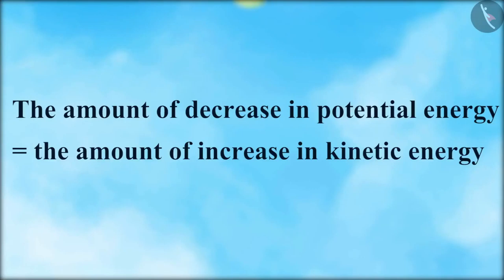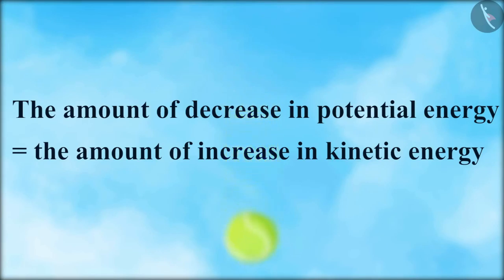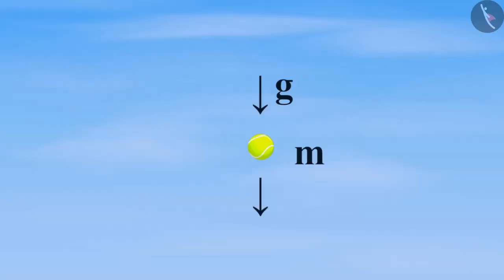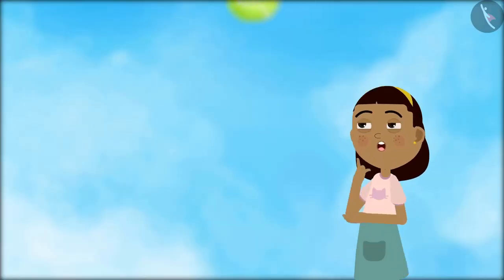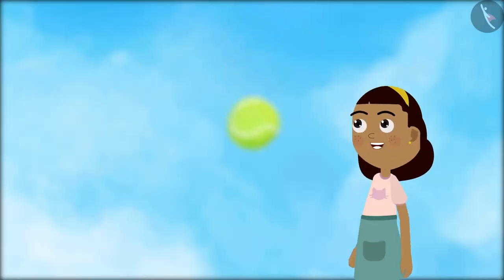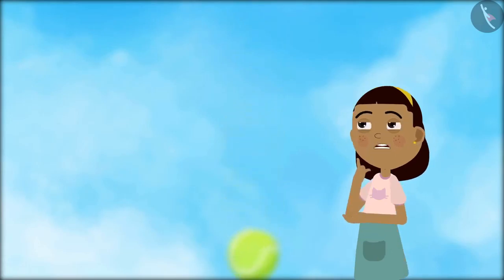During the free fall of the ball, the amount of decrease in potential energy equals the amount of increase in kinetic energy. Thus there is a continuous transformation of gravitational potential energy to kinetic energy. Now let us see if the total energy of an object always remains constant or not.